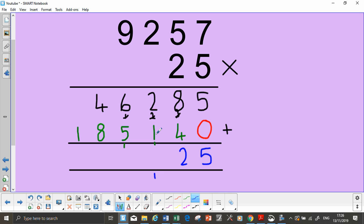2 add 1 is 3, add my 1 is 4. 6 add 5 is 11. So my 1 goes there, 1 underneath.